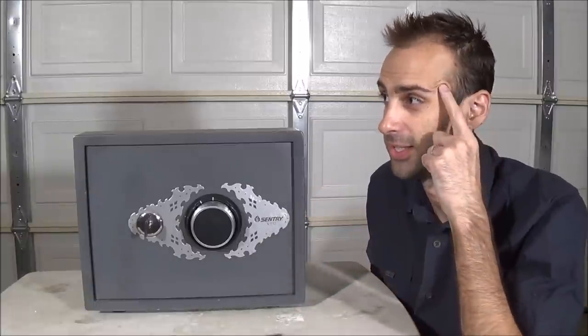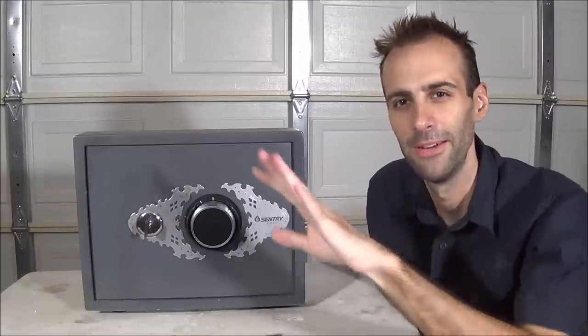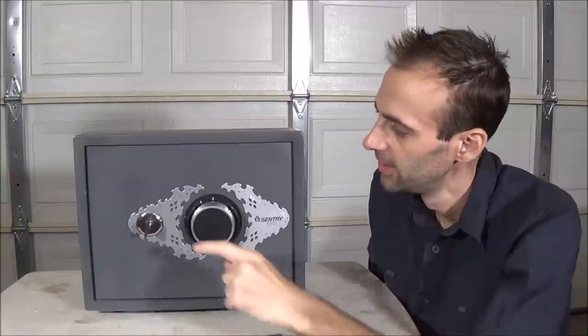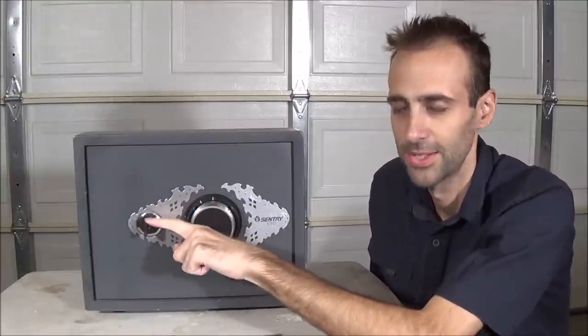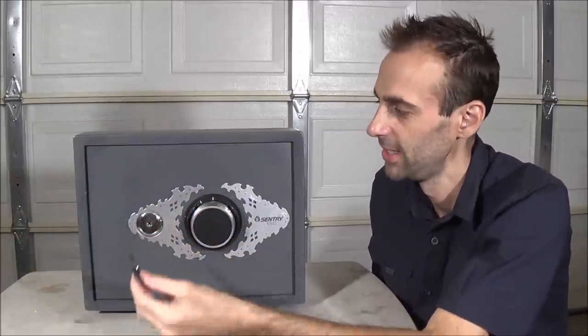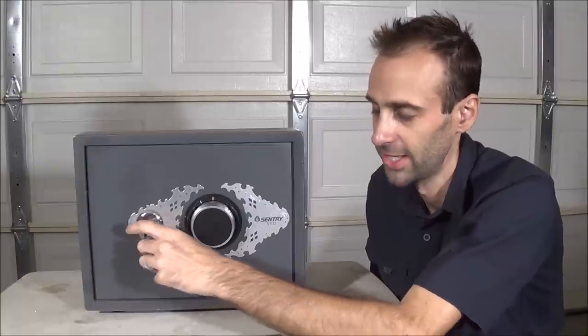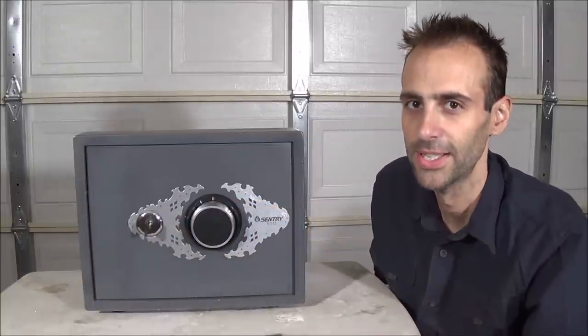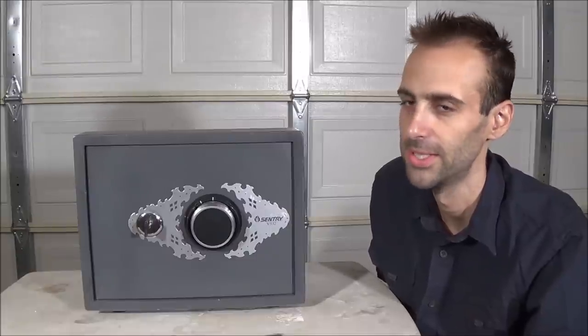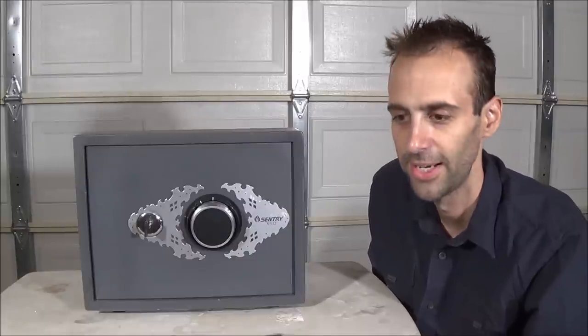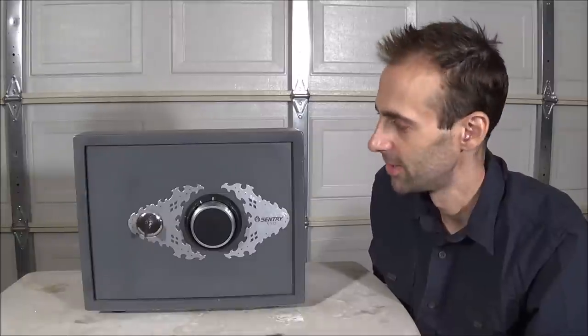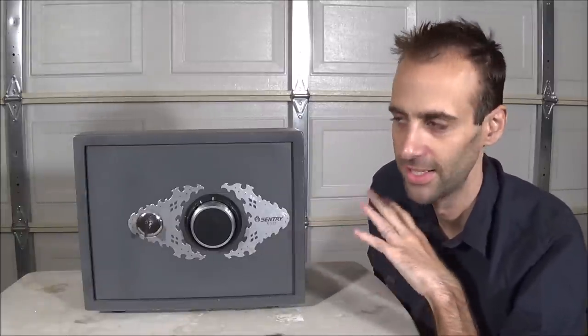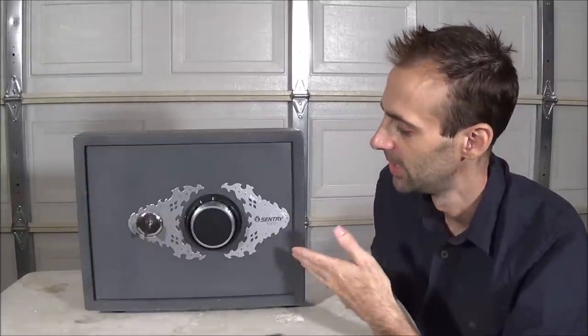The only thing I was able to find was an in-wall safe that would go behind a picture that has the dual lock. It's got this key, you've got to have the key to open it instead of a handle, and it's got a combination lock. Even with that, nobody showed pictures of what's behind it or the lock mechanism.